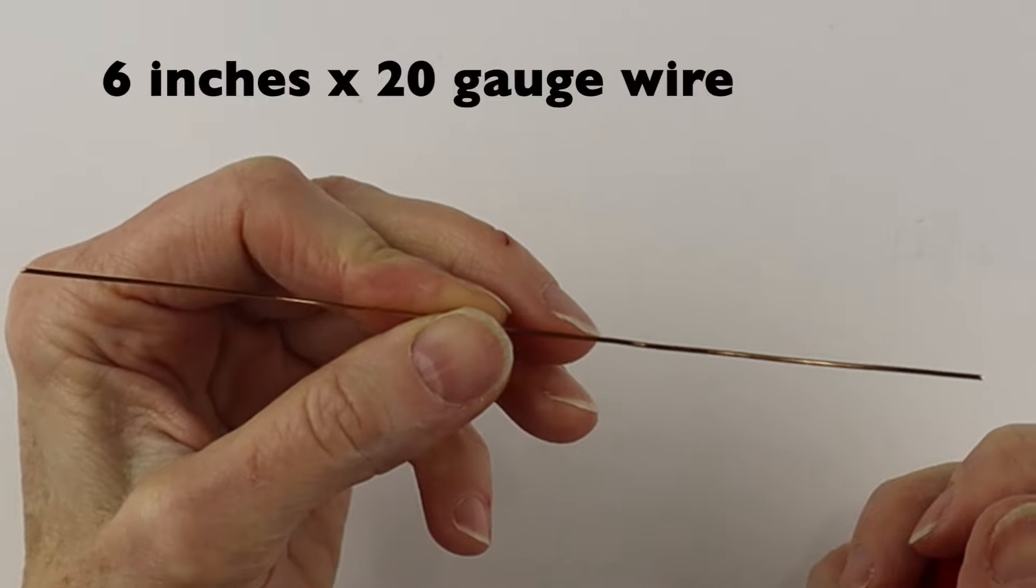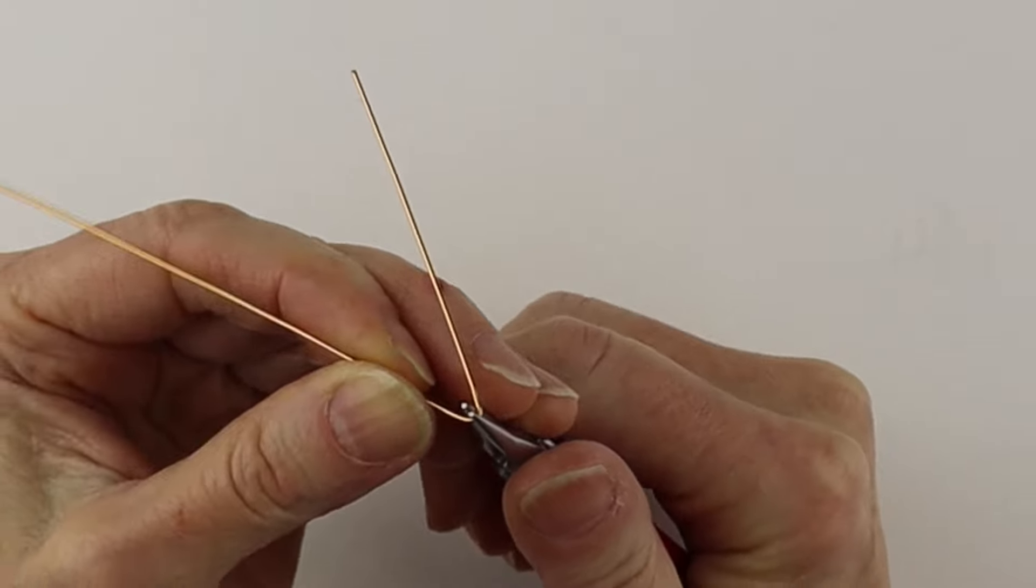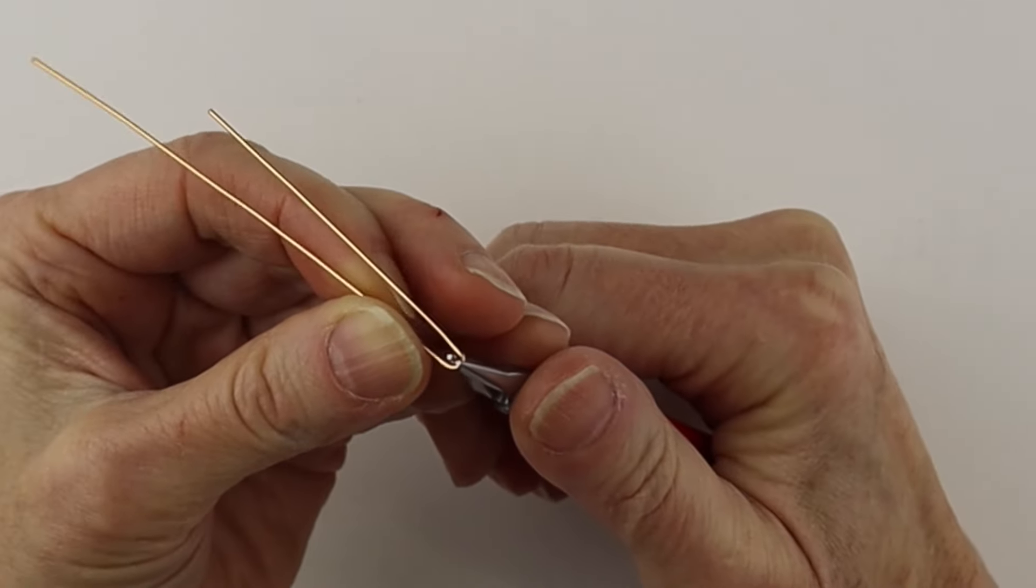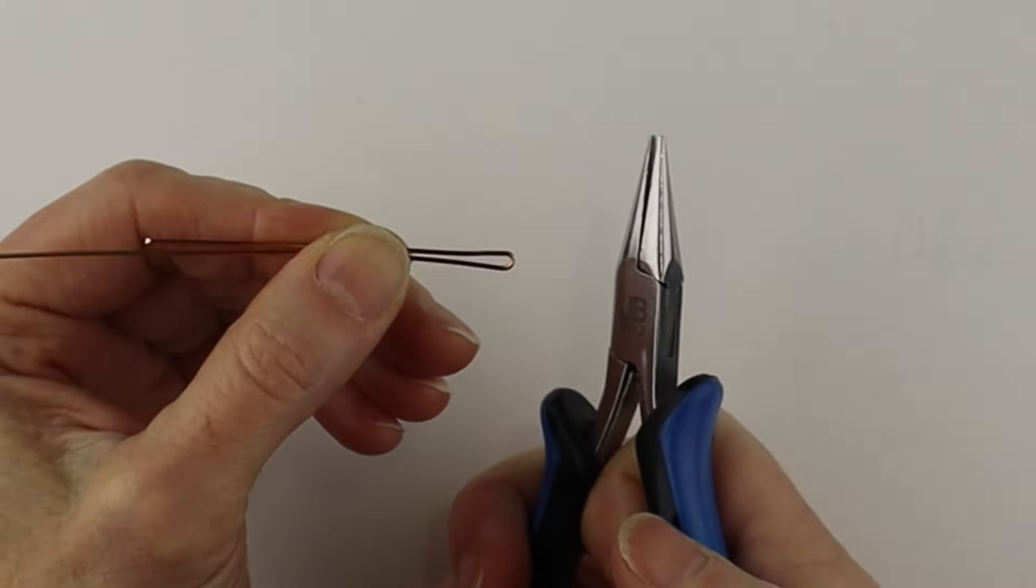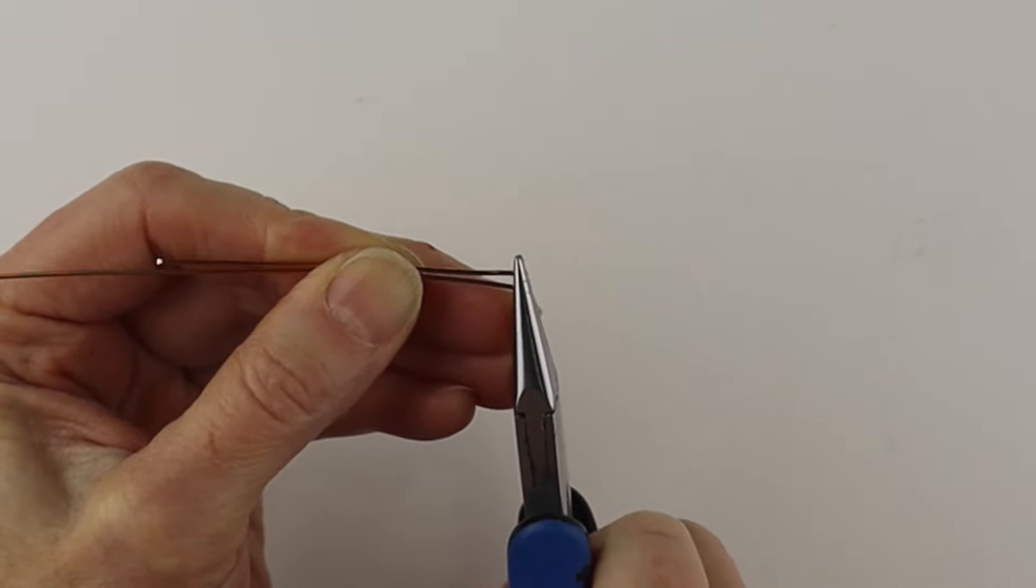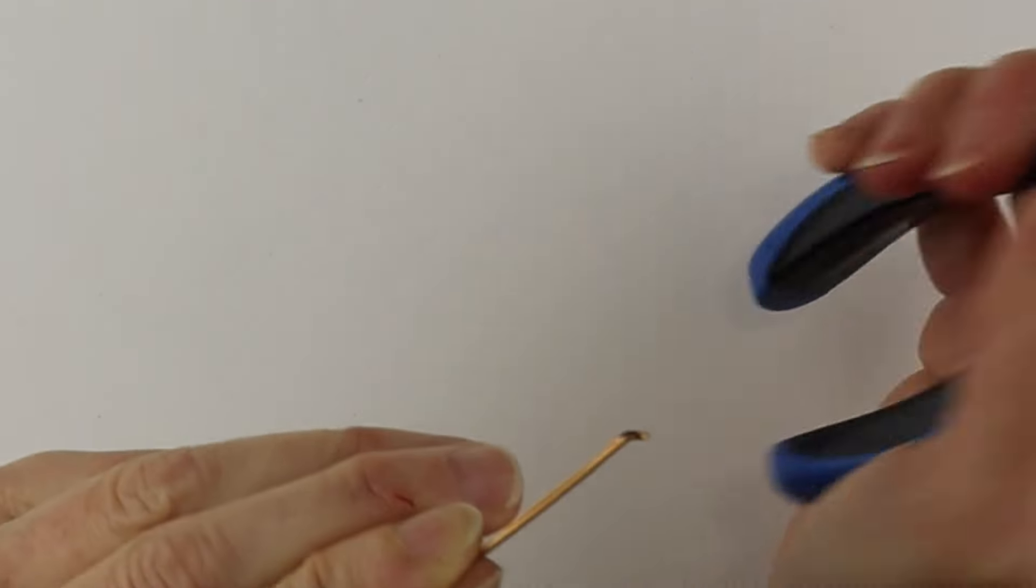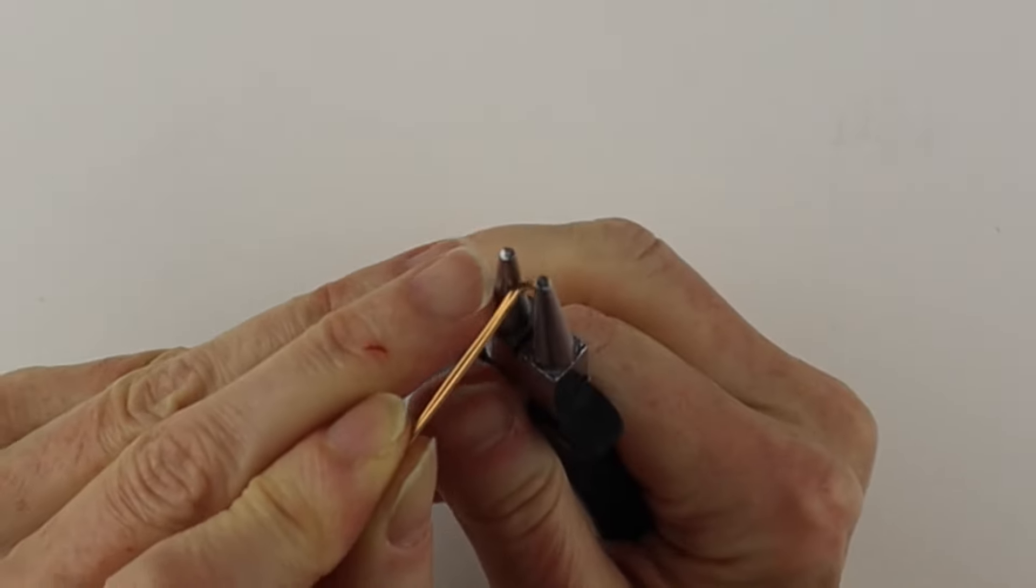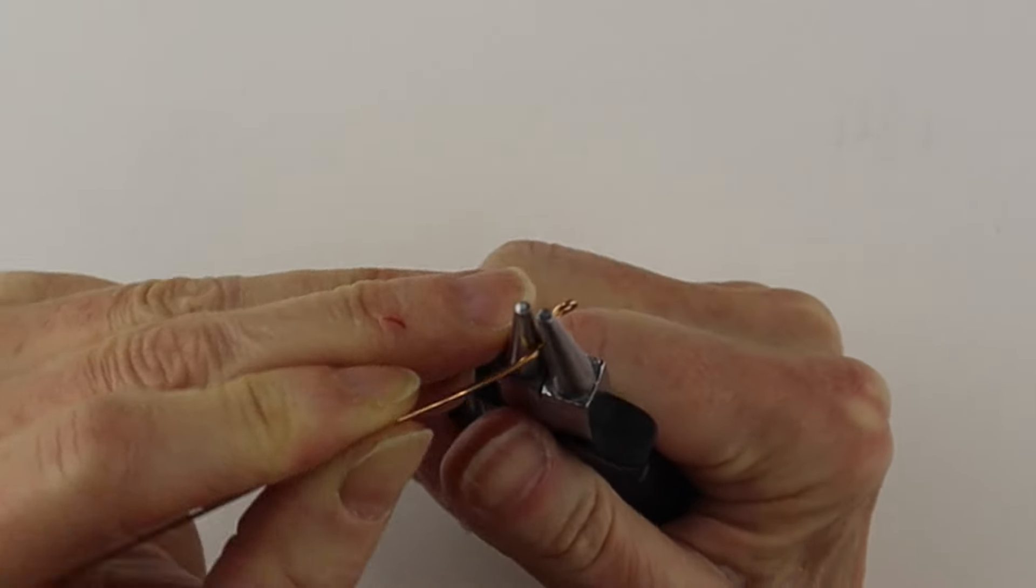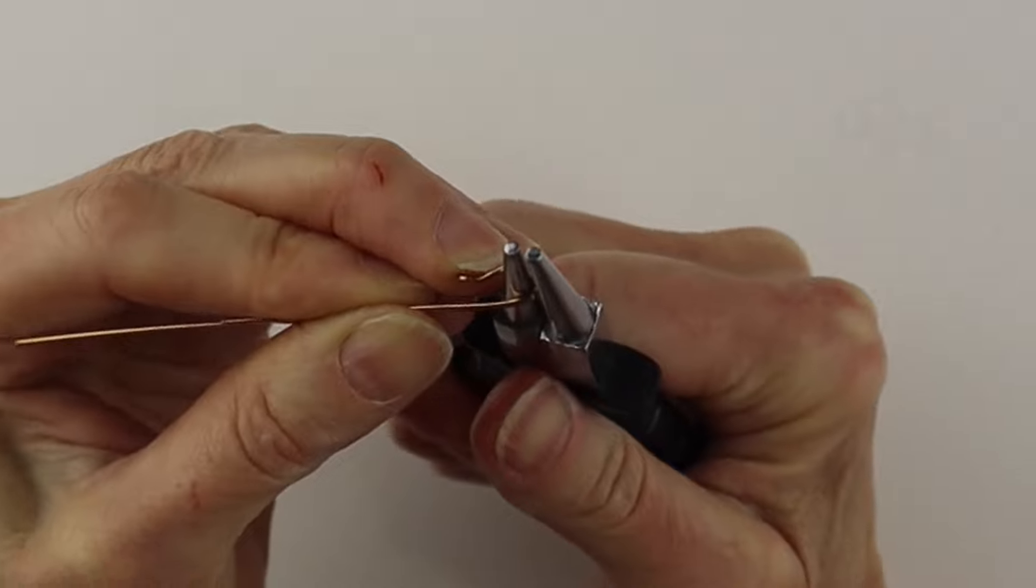We'll take about six inches of the 20 gauge wire and a couple inches from the end. I'm just going to loop it around, then we'll take our flat pliers, hold it about an eighth of an inch from the end and just bend it back on an angle. Then take our round pliers, hold it about three eighths of an inch and bend it down.